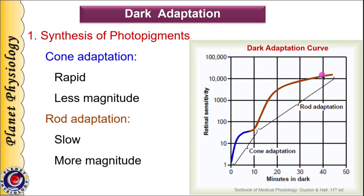Synthesis of rhodopsin continues as long as the person remains in dark. During this process, vitamin A is also converted to retinal and used to synthesize rhodopsin. The maximum amount of rhodopsin that can be synthesized depends on the availability of opsin molecules.